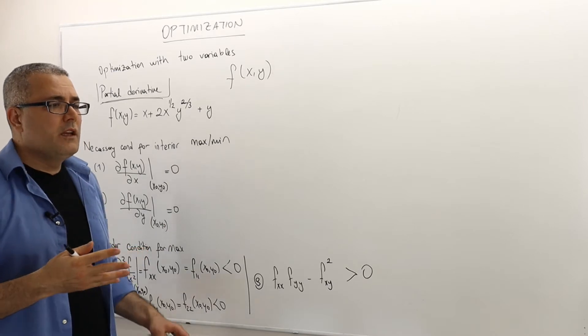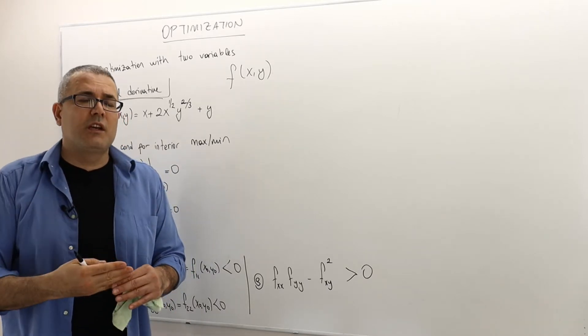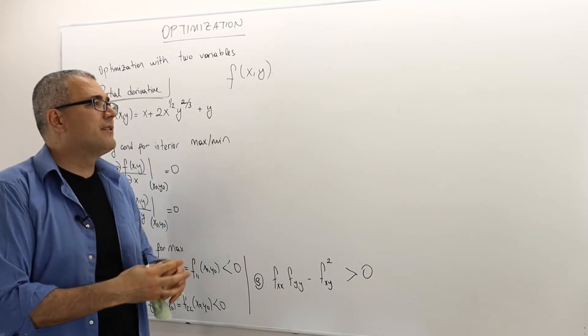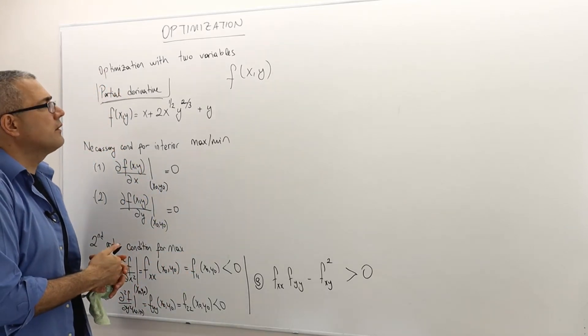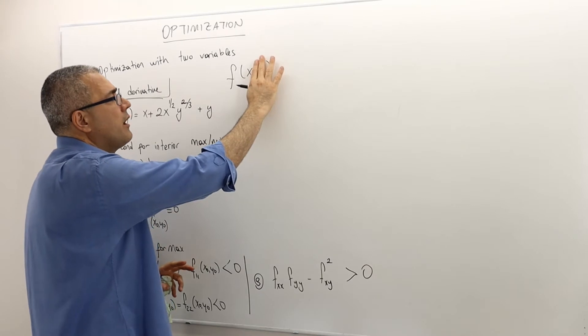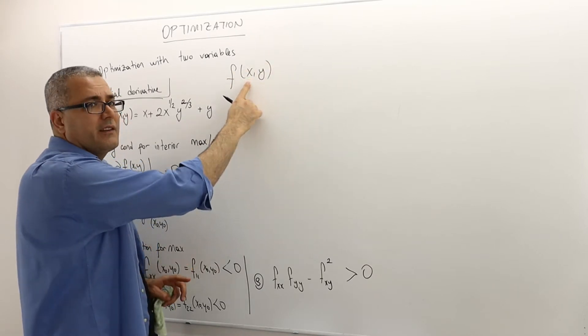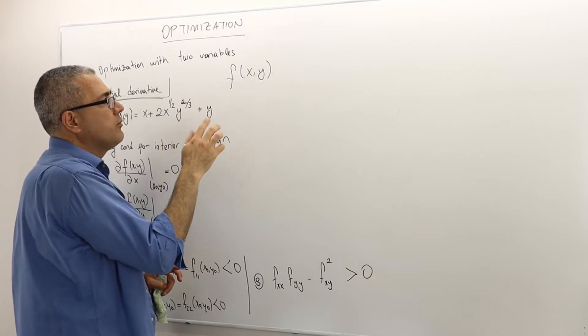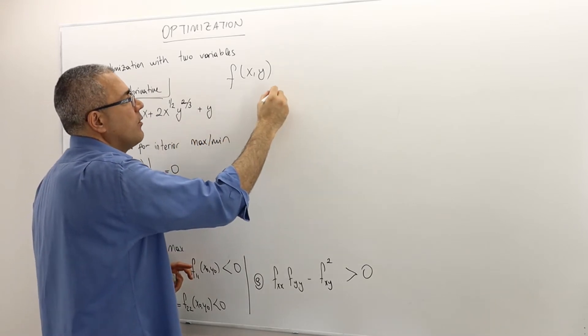So therefore, the rate of change here in terms of which variable, that distinction is important. So if you are fixing variable y and then changing x a little bit, we call it a partial derivative with respect to x. And this is how we denote it.